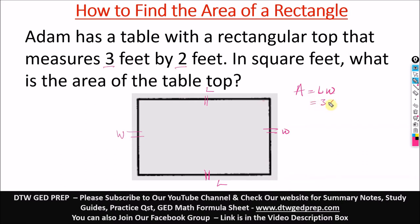From here we have 3 times 2, and that would give us 6. The question says in square feet, so feet by feet, so we're going to have 6 square feet. The area of this rectangular tabletop that Adam has is 6 square feet.